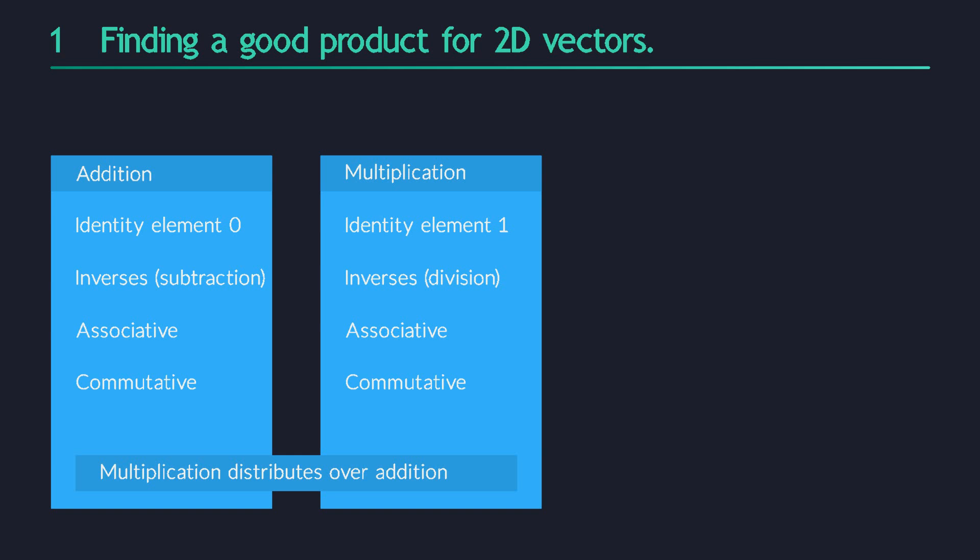We tried many different possibilities and we came to the conclusion that only a single product has all of these properties. That product is complex multiplication. And so we found that the complex numbers are the only two-dimensional number system with a well-behaved multiplication.